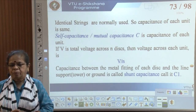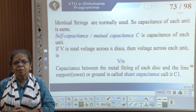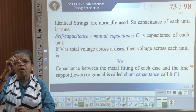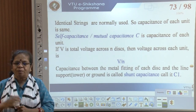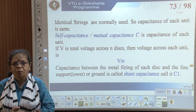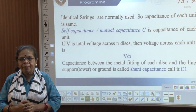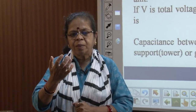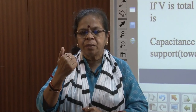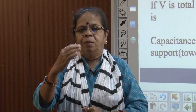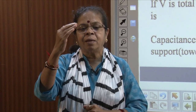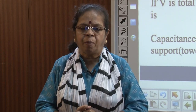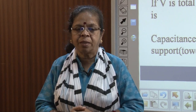However, this is not the full story. There is also capacitance between the fitting of each disc and the ground or the supporting structure — which could be a tower. This is called the shunt capacitance, denoted by C1, and it disrupts the expected equal voltage distribution.